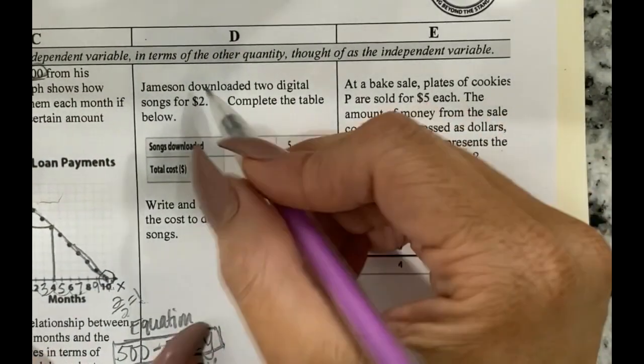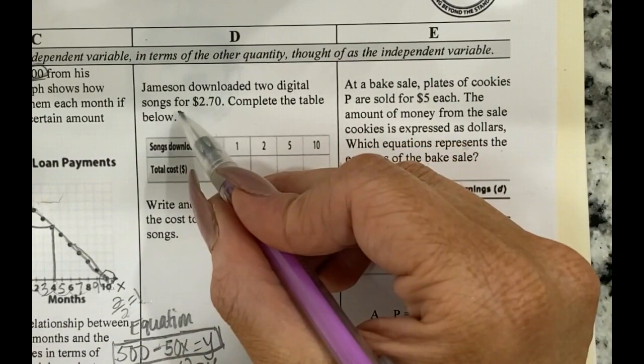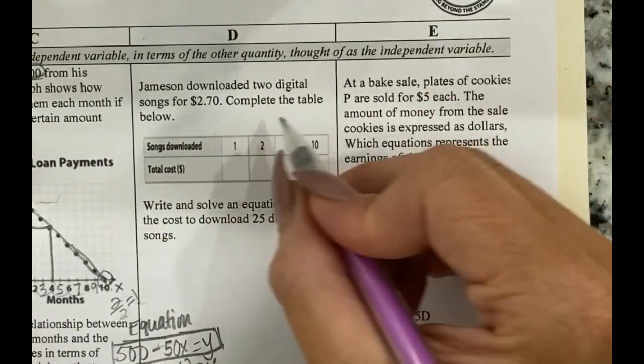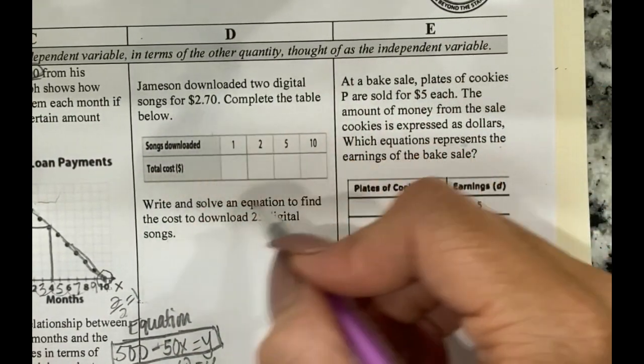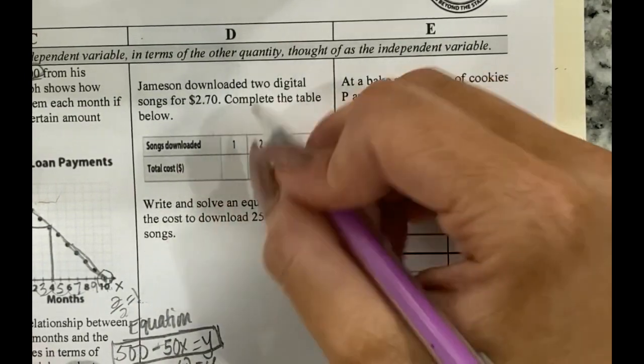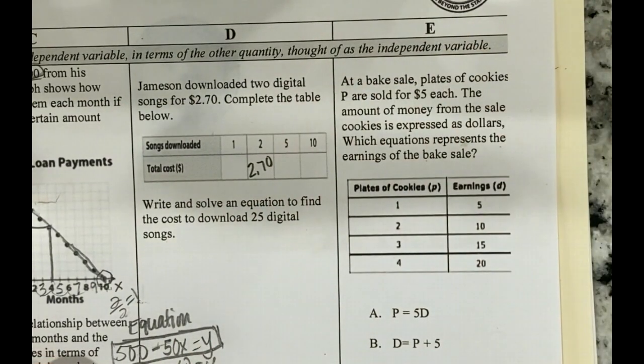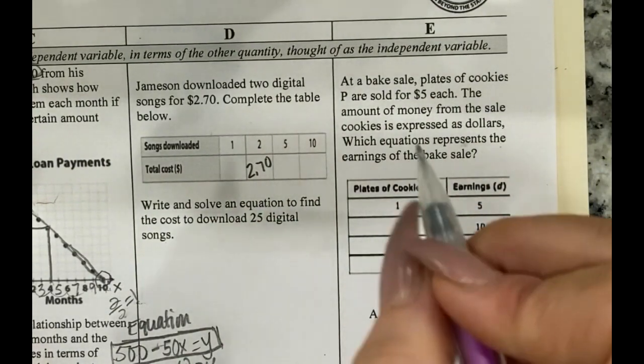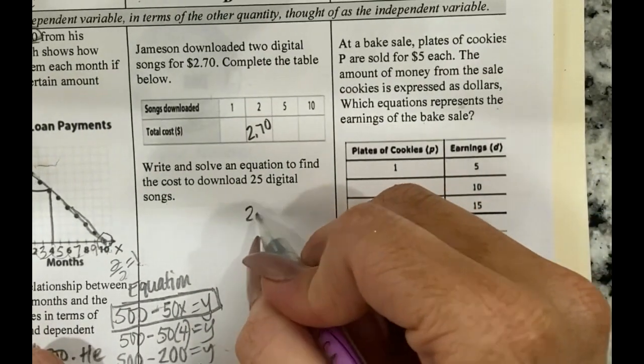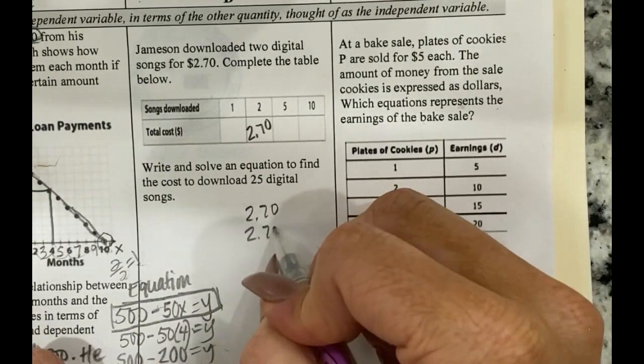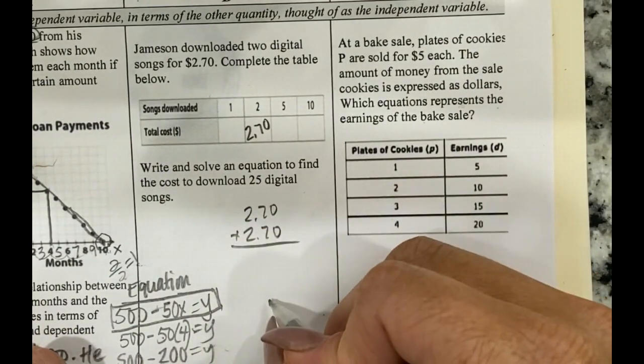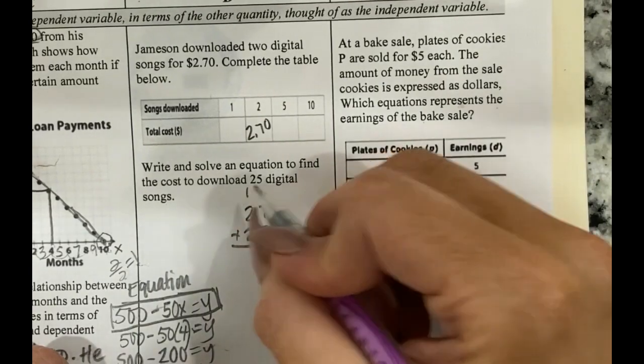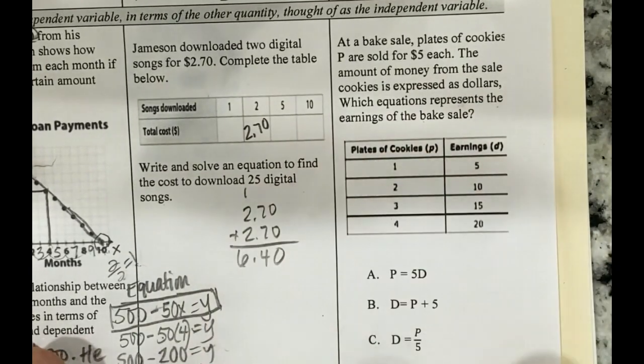Okay. So let's just kind of get this first part started and then I'm going to let you go with the rest of them. Okay. So it says Jameson downloaded two digital songs for $2.70. Complete the table below. Okay. So two digital songs. Okay. So that's 270 here. Okay. Oh, how do I fill in the rest of this table? Okay. I can do a couple of different things. So 270 plus 270, I can add up 270. So what is that? Six. Oh no, that's five.